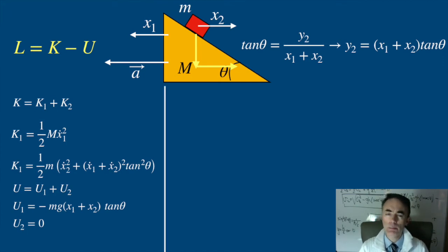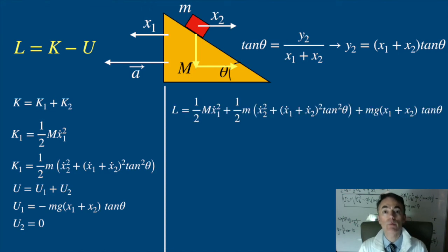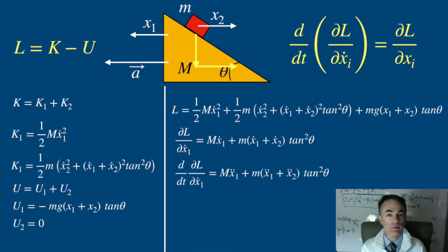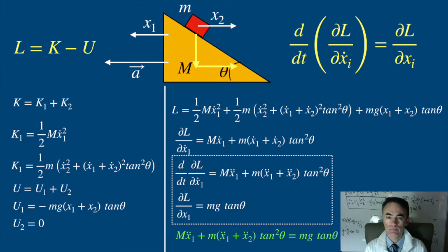Now let's apply Euler-Lagrange equations to this Lagrangian. There are two variables, x1 and x2, although they are related through the center of mass, so I'll apply Lagrange equations to each one of them. The partial derivative of the Lagrangian with respect to x1 dot, the time derivative of this, the partial derivative of the Lagrangian with respect to x1, and the same for the other variable.